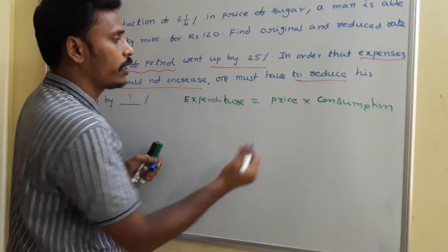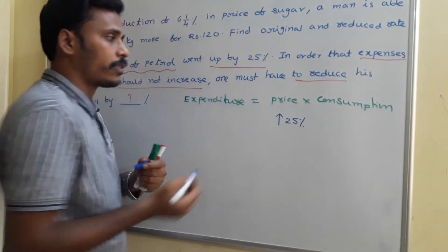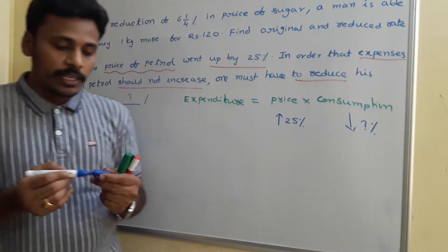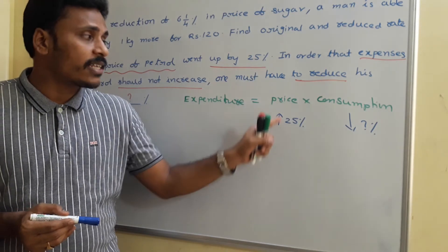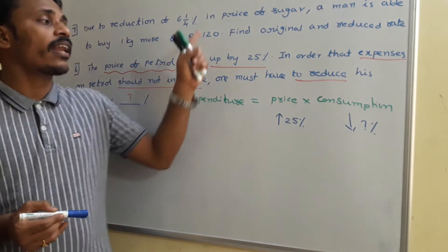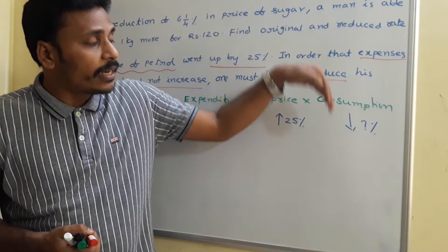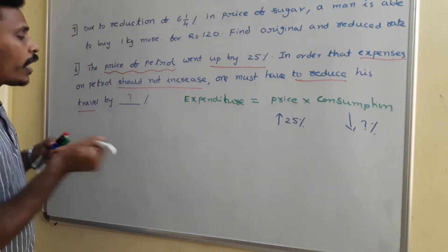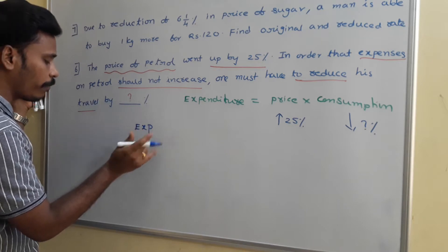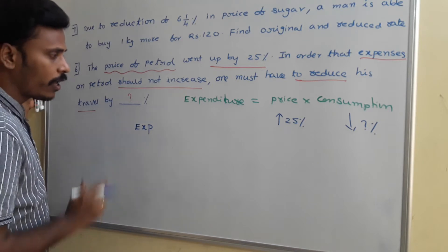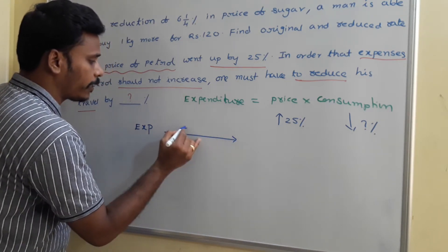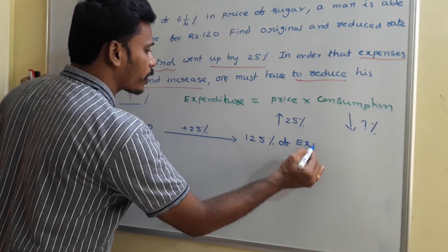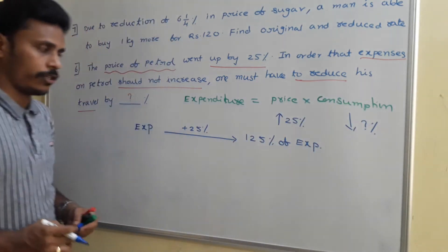Rising in the price automatically raises my expenditure, and a decrement in consumption also affects expenditure. Before the price rise, if my expenditure is some amount, say E, and if the petrol cost is raised by 25 percent, then the new expenditure will be 125 percent of E. That's the analyzation of the question — now let's look at how to actually solve it.